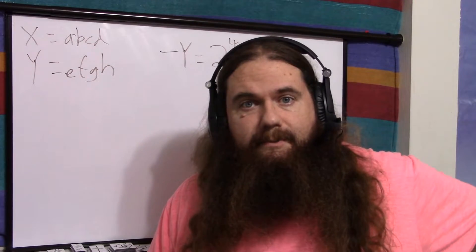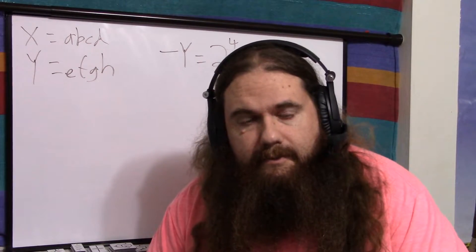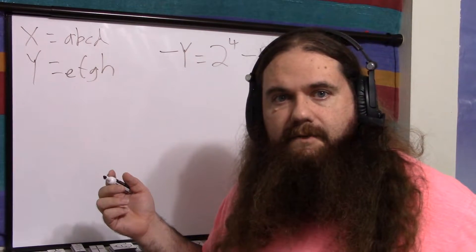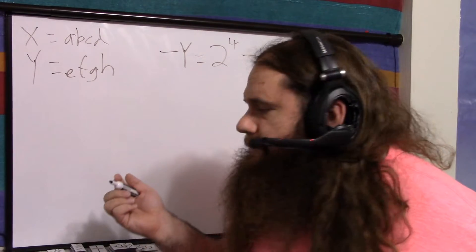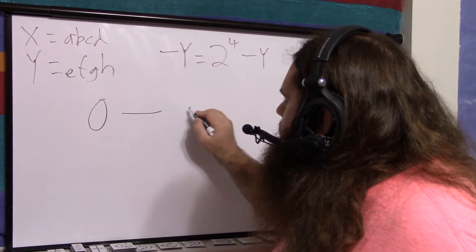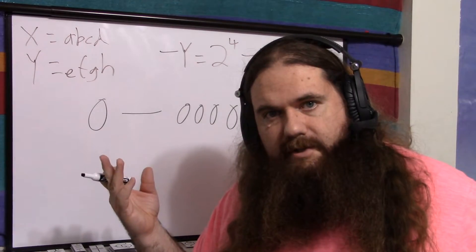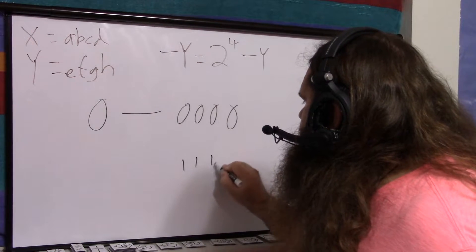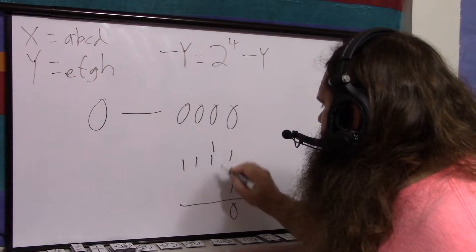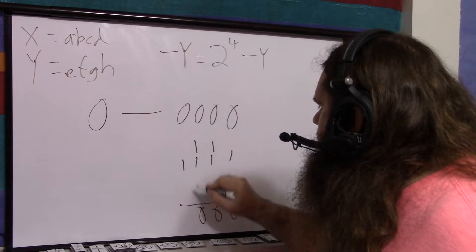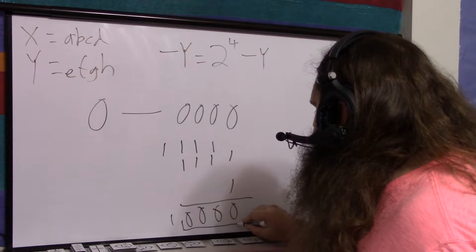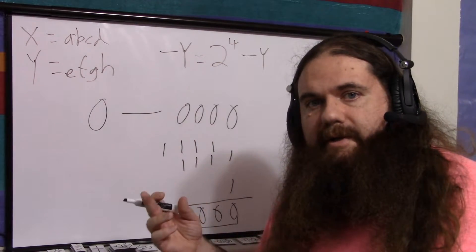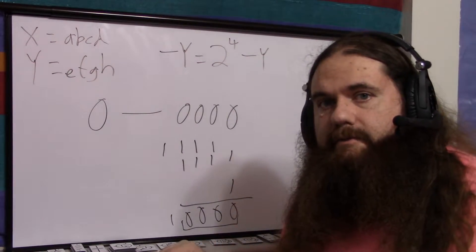What about 0? One of the things with sign-magnitude and one's complement is positive and negative 0. With 4 bits, 0 is 0, 0, 0, 0. Let's take the two's complement of 0. Flip the bits, add 1, and you can see that we're going to carry the entire way. And the last 4 bits — remember, only the last 4 bits matter — is 0. If you negate 0, you still get 0. And you get the same 0, not a negative 0, the same 0.